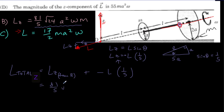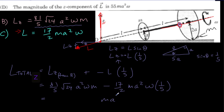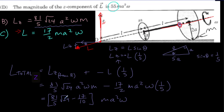The total angular momentum equals lz from part B plus this negative lz: 81 over 5√24 · ma²omega minus (17/2 · ma²omega) times 1/5. Taking ma²omega out: 81 over 5√24 minus 17/10. The square root of 24 is almost 5, so this is approximately 80 minus 1.7, which does not equal 55. So statement D is false, and this expression represents the total angular momentum in the z direction of our system.